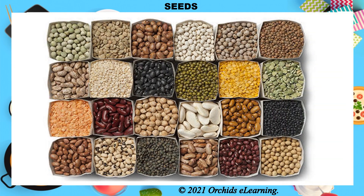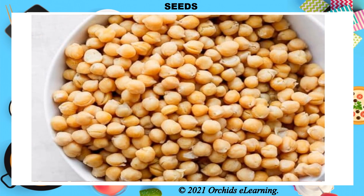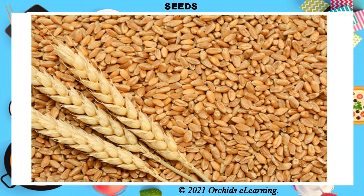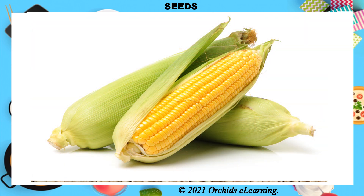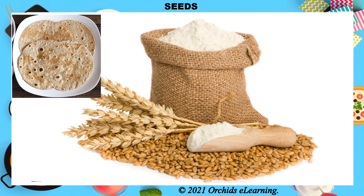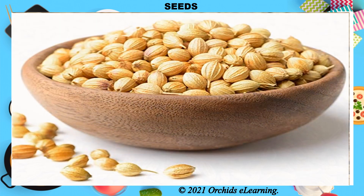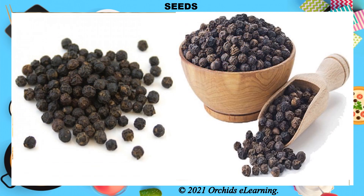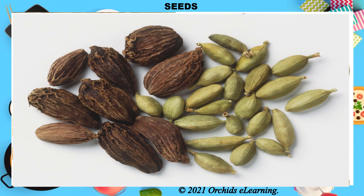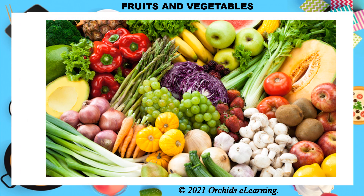Pulses such as mung bean, kidney bean, and chickpea, as well as cereals such as wheat, maize, and rice, are seeds of plants. Wheat grains are ground to make flour, out of which we make chapatis. We also use the seeds of certain plants such as cumin, coriander, pepper, and cardamom as spices to add flavor to our food.